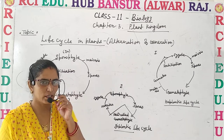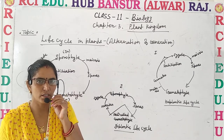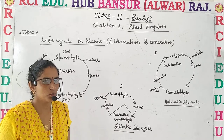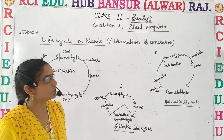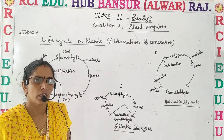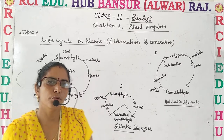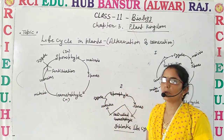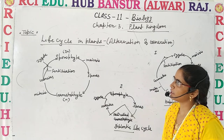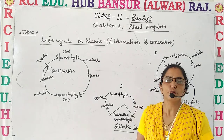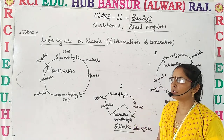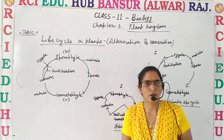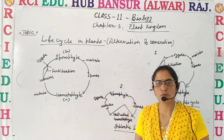Hello students, welcome to the online classes of RCA Education Hub, Bansur. Let's continue chapter number 3, Plant Kingdom. Today we discuss about the life cycle of plants, alternation of generation. Before that, we discussed about the bryophyta, pteridophyta, gymnosperms, angiosperms and their types also.